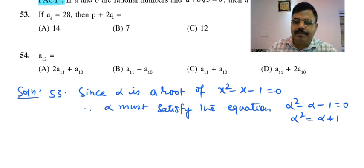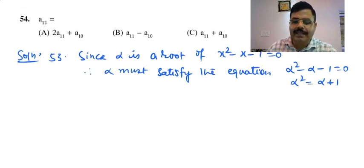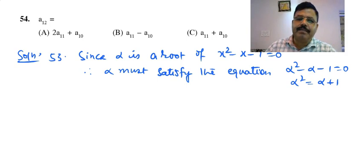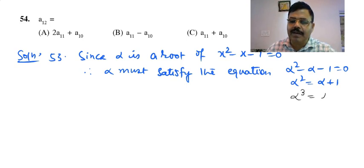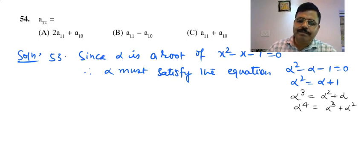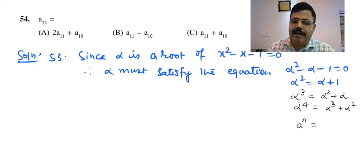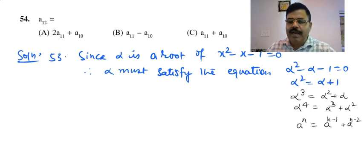For Question 53: since alpha is a root of x² minus x minus 1 = 0, alpha satisfies the equation, so alpha² minus alpha minus 1 = 0, meaning alpha² = alpha + 1. Multiplying repeatedly by alpha, we find that alpha to the power n equals alpha^(n-1) plus alpha^(n-2), so a_n = a_(n-1) + a_(n-2).